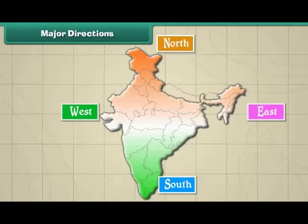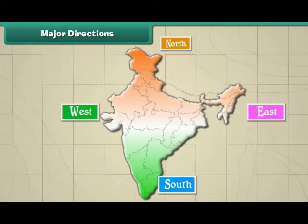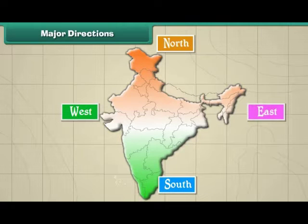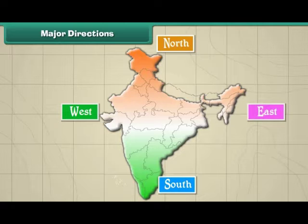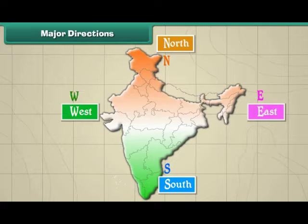There are four main directions. They are North, East, South, and West. The four letters N, E, S, and W represent these directions.